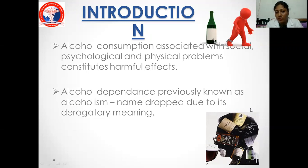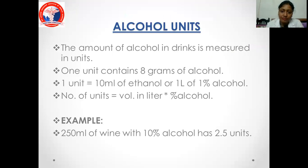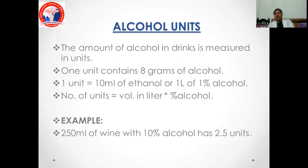Alcohol dependence was previously known as alcoholism, but this term is derogatory and has been dropped. The formula is C2H5OH — derivatives of hydrocarbons. Ethyl alcohol, also known as ethanol, is the most common form. It is metabolized in the human body by alcohol dehydrogenase. Regarding alcohol units, the amount of alcohol in a drink is measured in units: one unit contains 8 grams of alcohol, equal to 10 ml of 1-litre of 1% alcohol. For example, 250 ml of alcohol has 2.5 units — that is 250 into 10 ml divided by 1000.